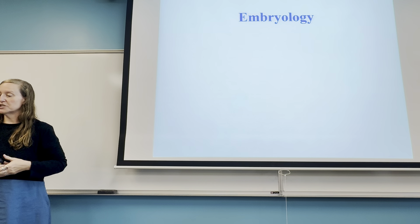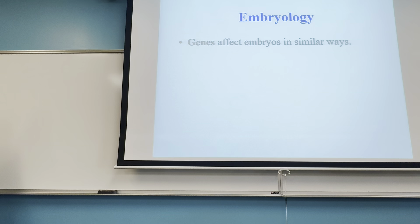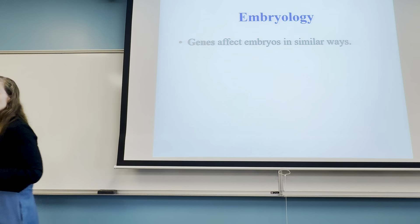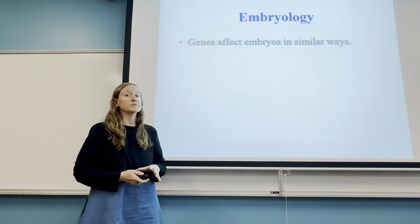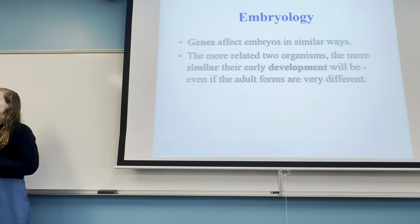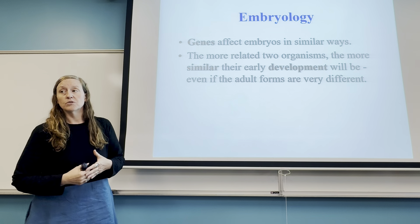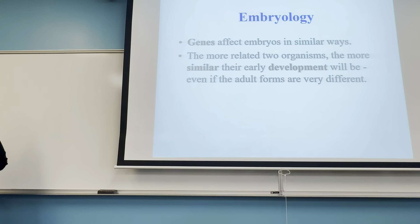The next piece of evidence for evolution is embryology. Because evolution is based in heredity, we know that genes are going to be the things coding for these similar structures. Genes will code for very similar things in related organisms, just like the genes that code for the bone structure in the forelimbs of vertebrates. When looking at embryos in very early development, the more closely related two organisms are, the more similar their embryo stages will be, even if their adult forms are very different.